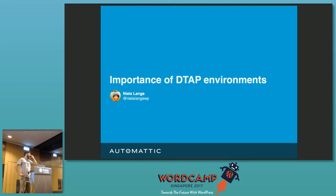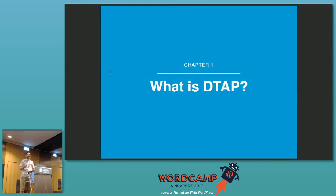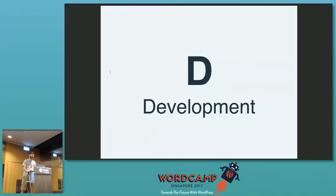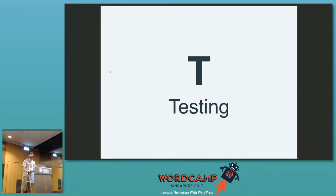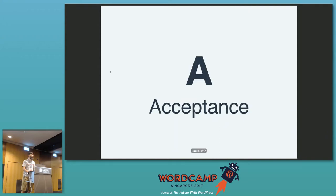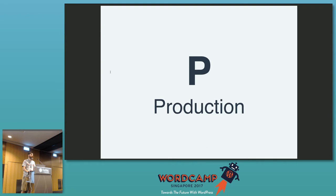Today's talk is about DTAP. It's a little bit more technical — I want to share some insights from my experience as a developer. What does DTAP actually stand for? DTAP is an acronym: D for development, T for testing, A for acceptance, and P for production.